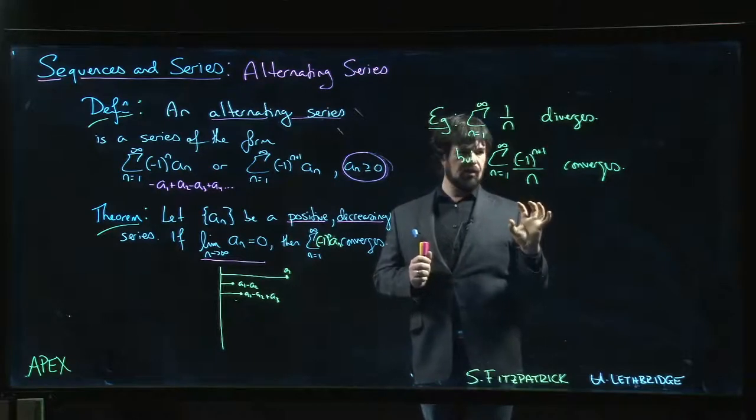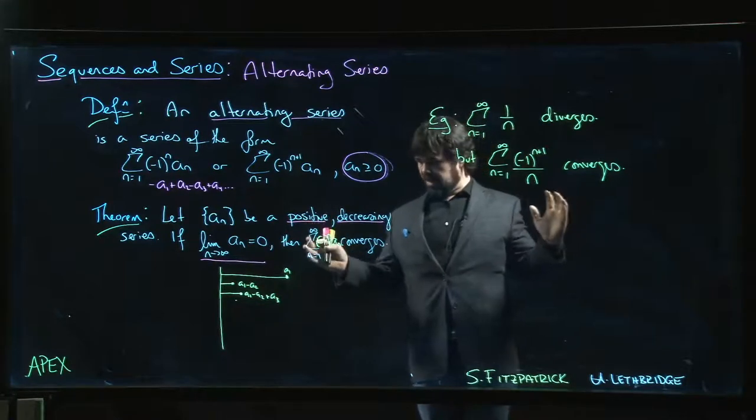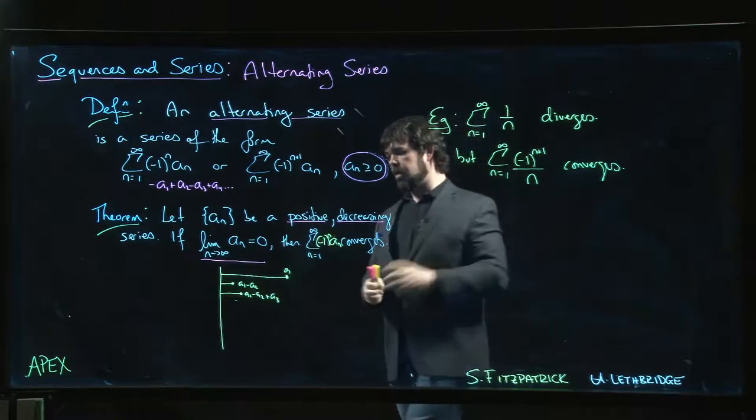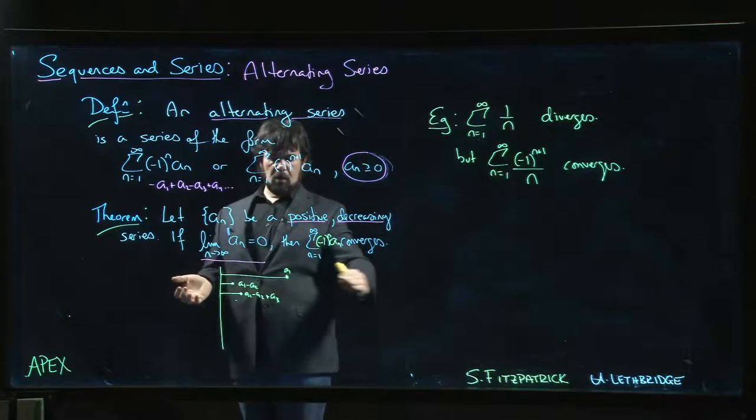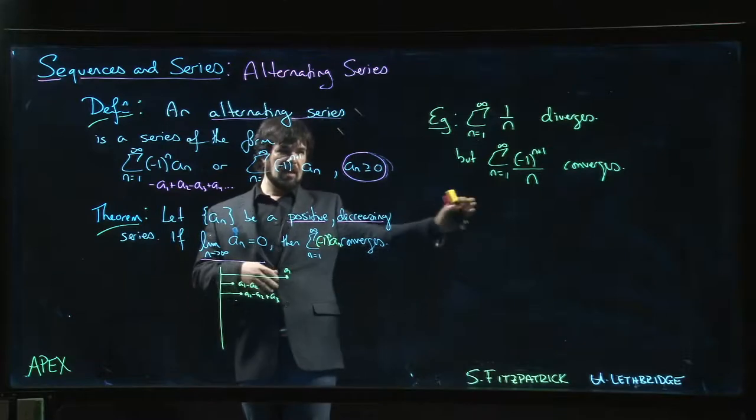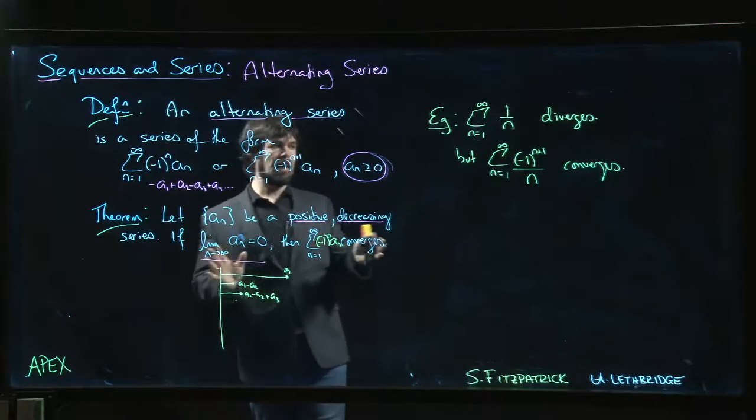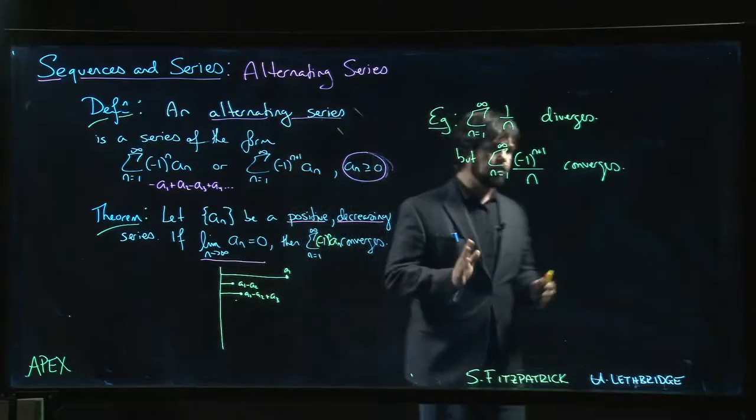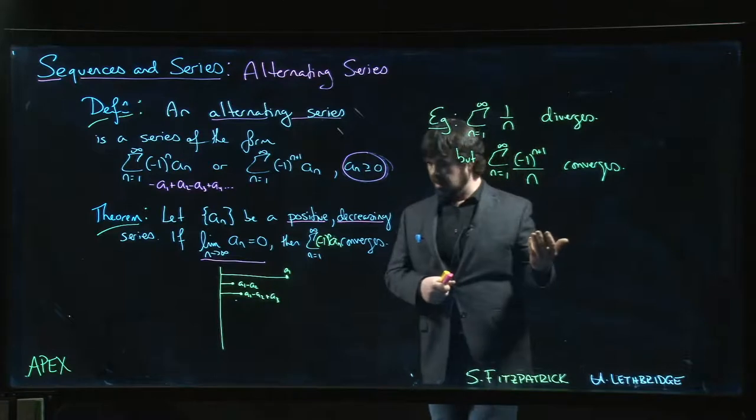Conditional convergence is sort of a fragile thing—it depends on the order in which you write down the terms, which is kind of an odd thing to think about. It comes into play when you're playing around with, you know, if you added a whole bunch of the positive terms and then some of the negative, and then a bunch more of the positive, and then some of the negative ones. There's a surprising thing, an interesting theorem that one can prove—it's a very difficult theorem, but it can be done.